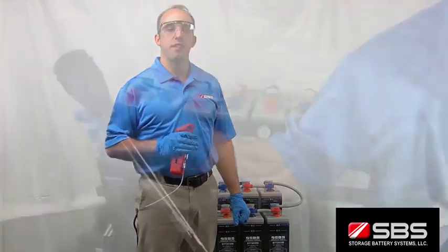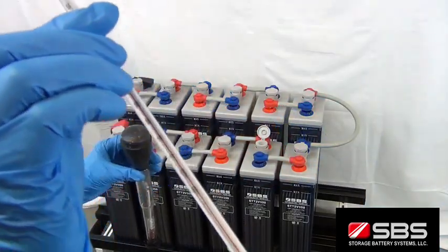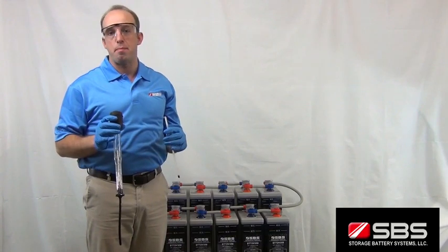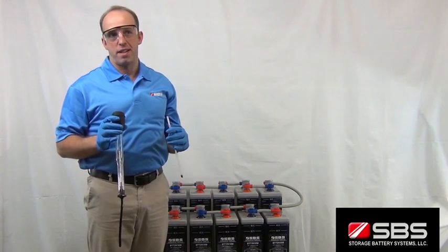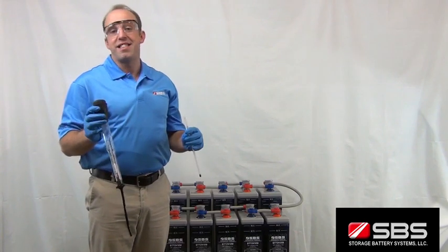First, this is a glass hydrometer and a thermometer that you use with a specific gravity correction table. This is what has traditionally been used to test a battery's specific gravity. It's a pretty simple device, but it's also very fragile and not very accurate.